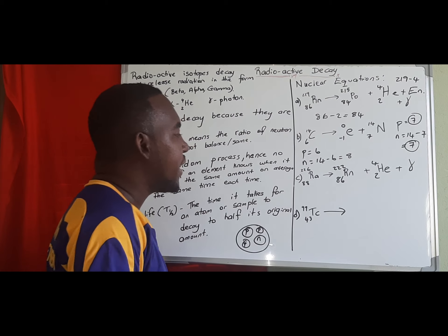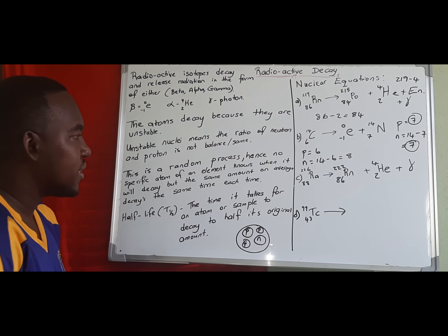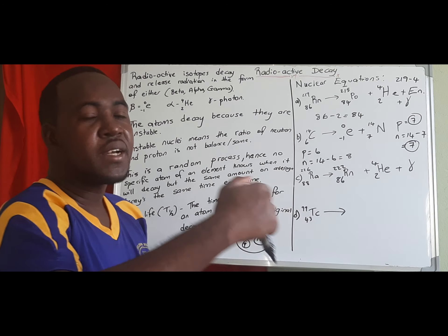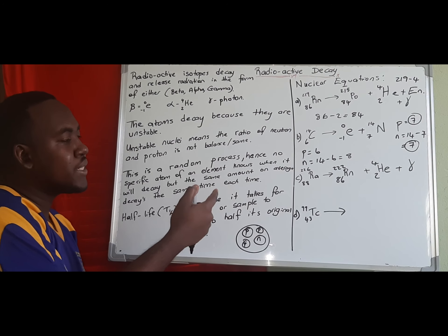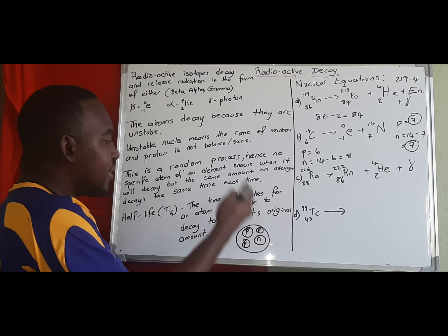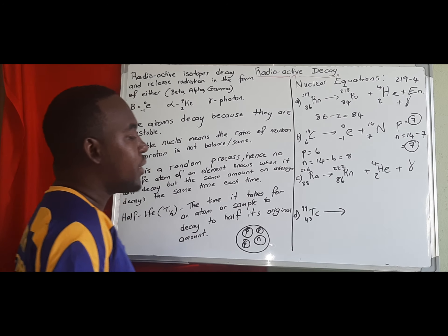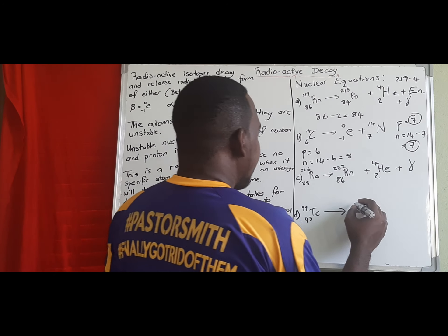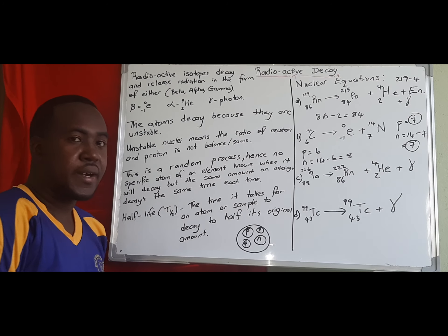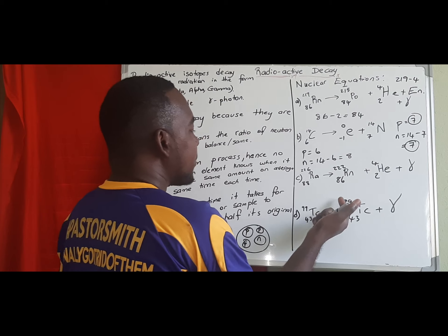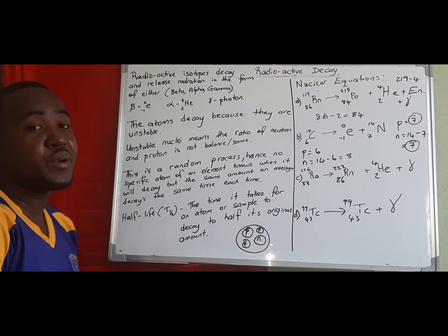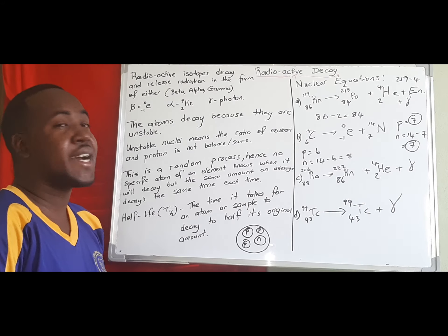Finally, let's look at technetium. This example shows a special case: technetium emits gamma radiation only. Technetium is a synthetic, man-made element. If you need to write a nuclear equation for an atom that only emits gamma, you write the same technetium 43-99 on the product side plus gamma, because gamma does not change the atomic number or the mass number. Thanks very much for watching — see you next time!